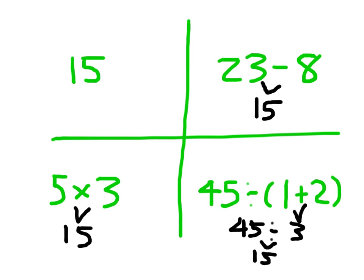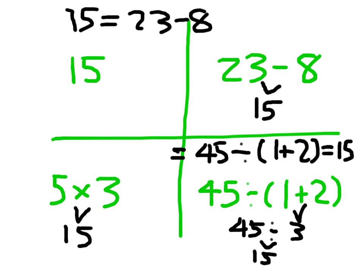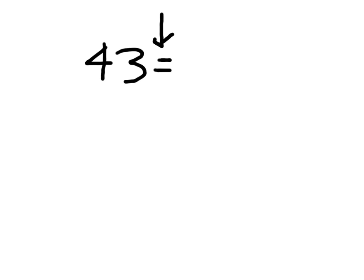Now what this means is that I can actually write equations. I could write an equation like 15 does equal 23 minus 8, or this bottom one here in the lower right-hand corner, 45 divided by 1 plus 2. It equals any of these other expressions that are here, or it just equals 15. So I can put an equal sign right here and write 5 times 3 over here, so that 5 times 3 equals 45 divided by 1 plus 2, or any of these possible combinations, because all of these really have the same value of 15 if we were to simplify or evaluate them. So we write an equation with what this calls an equal sign.